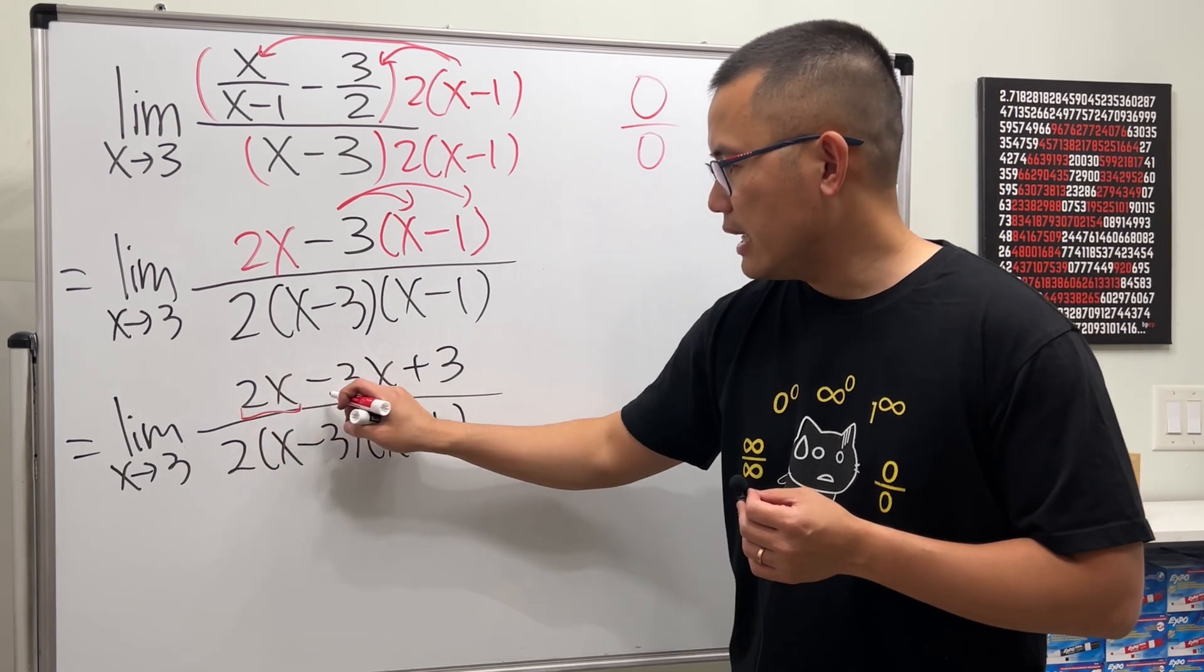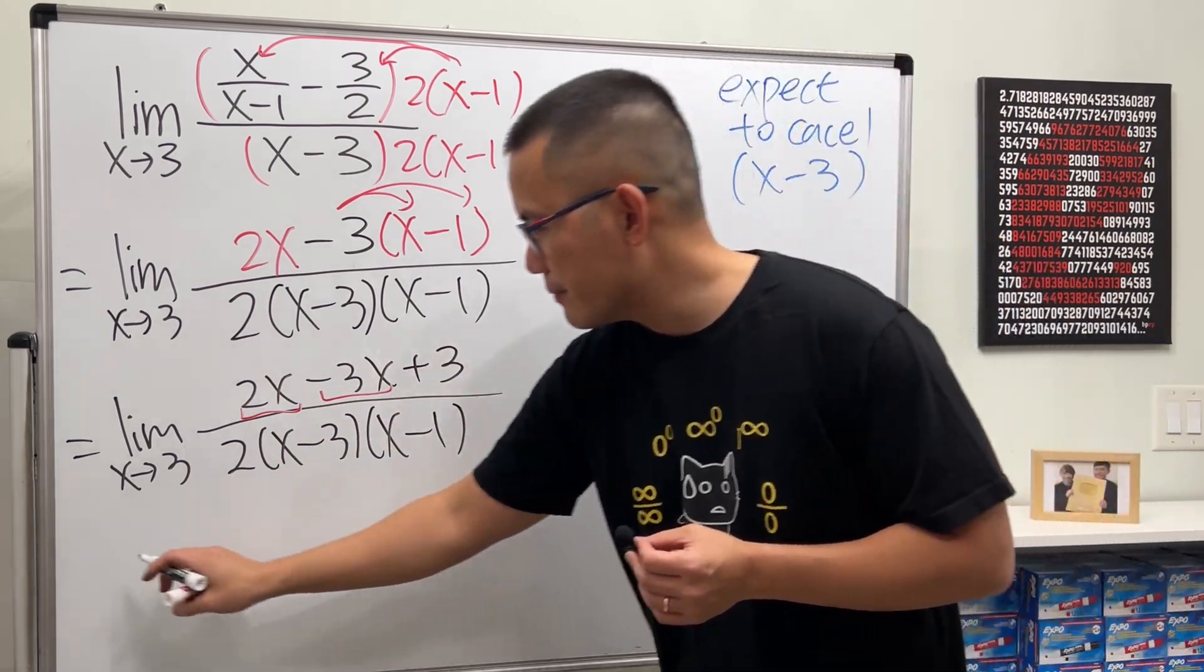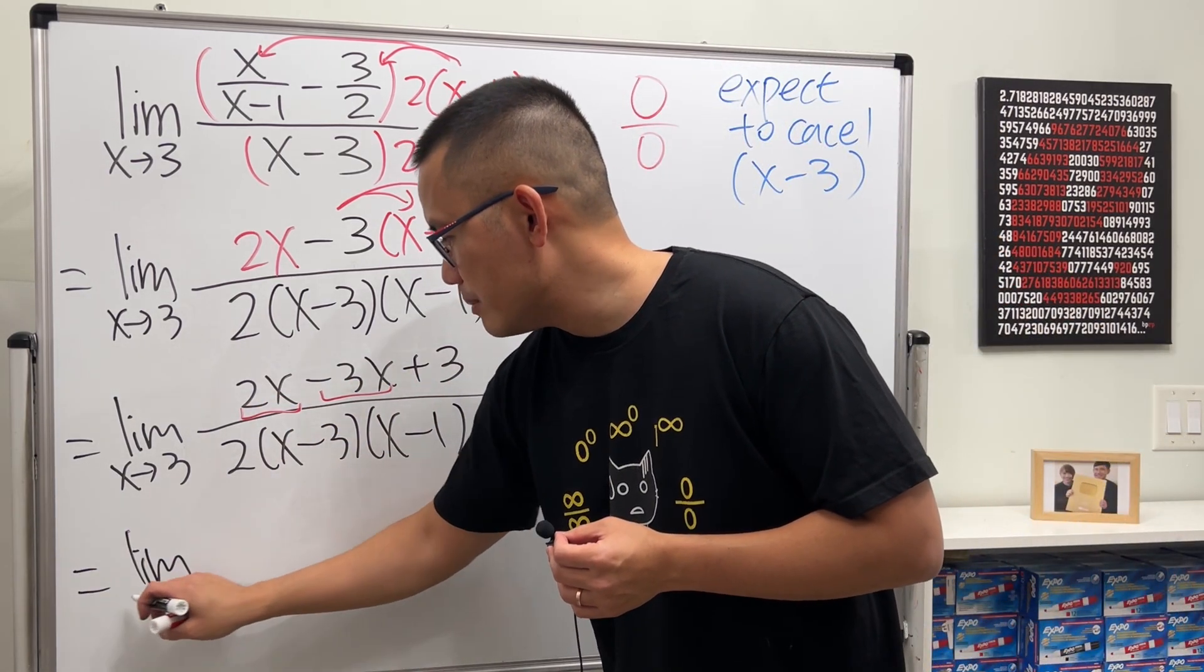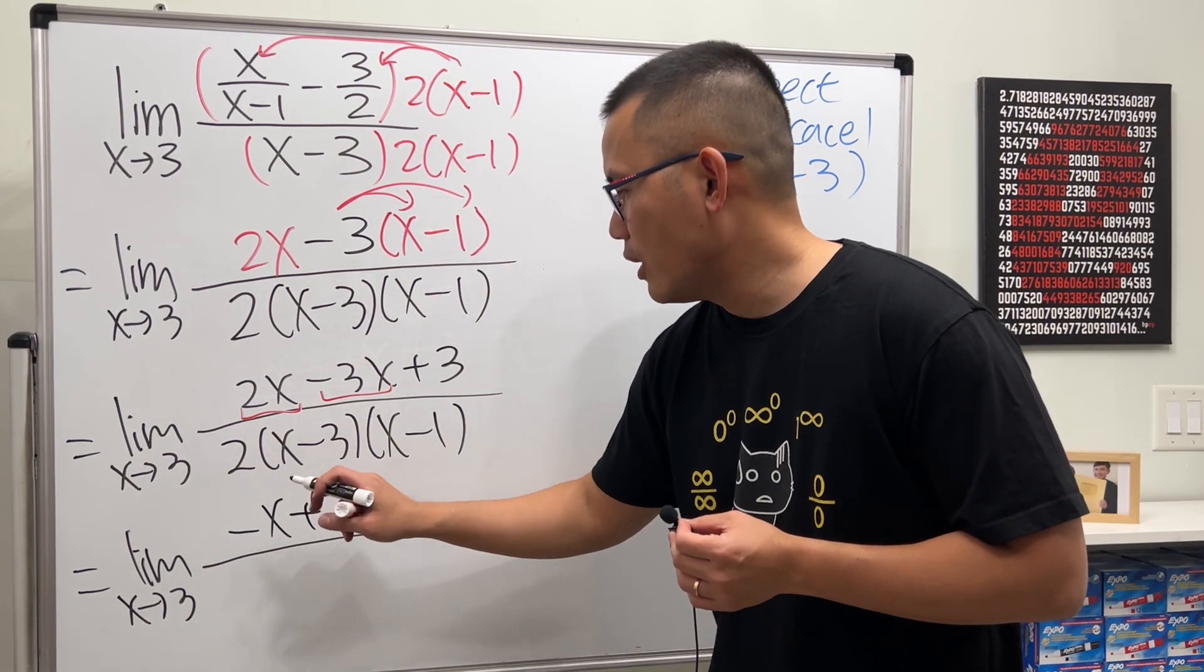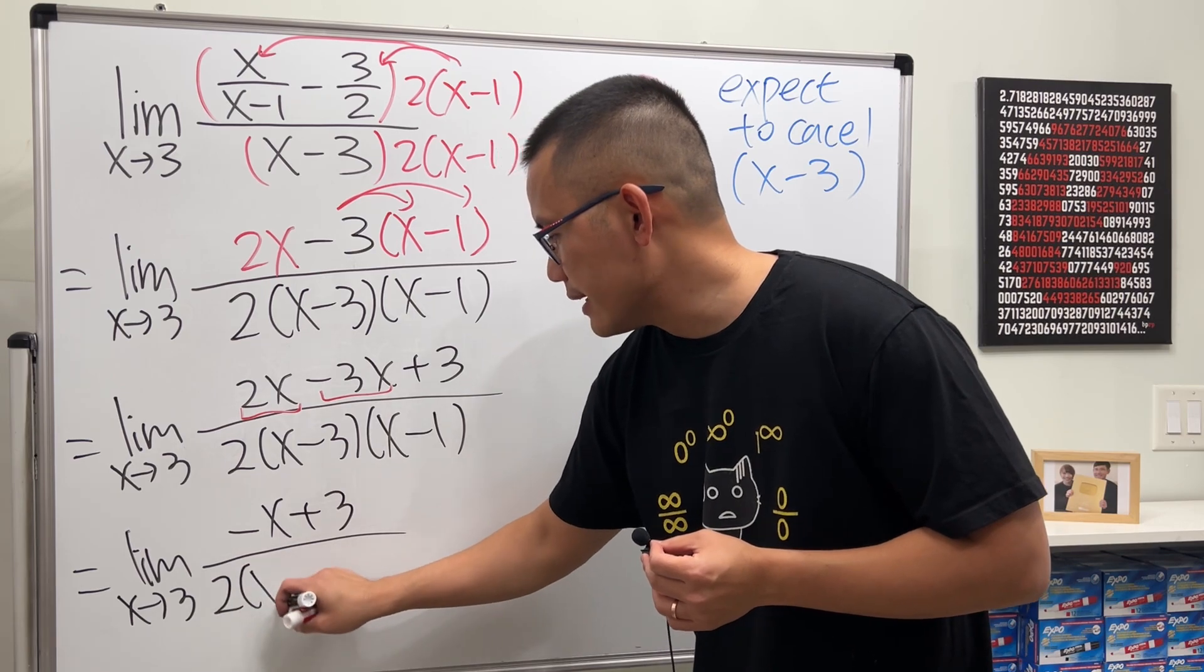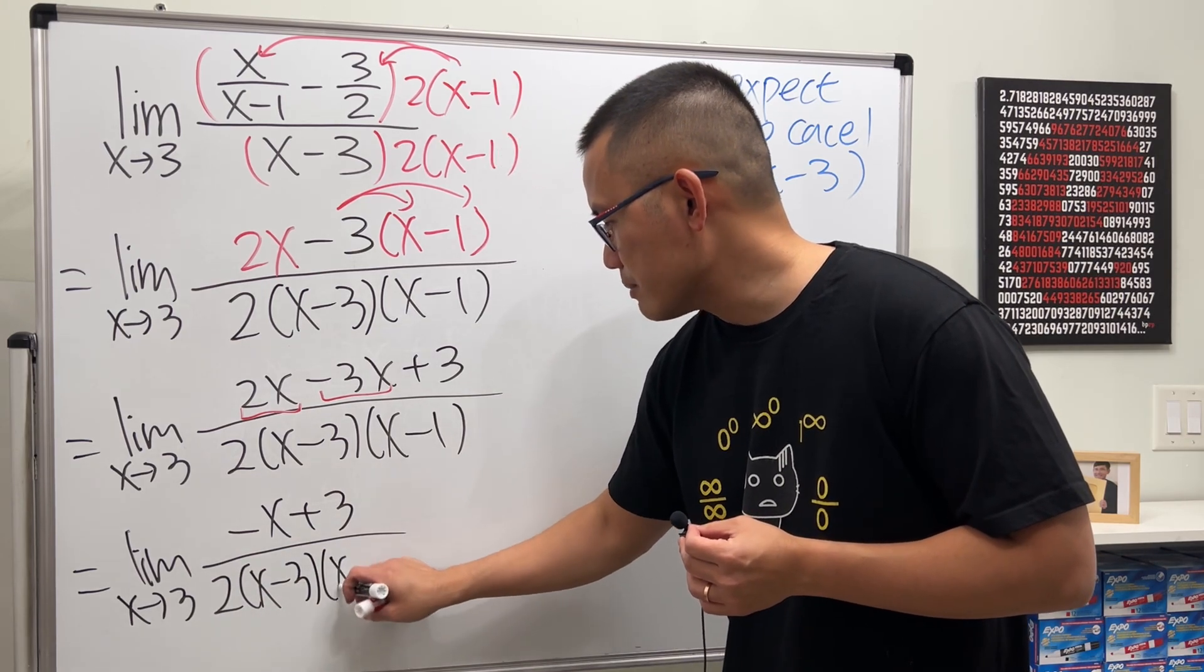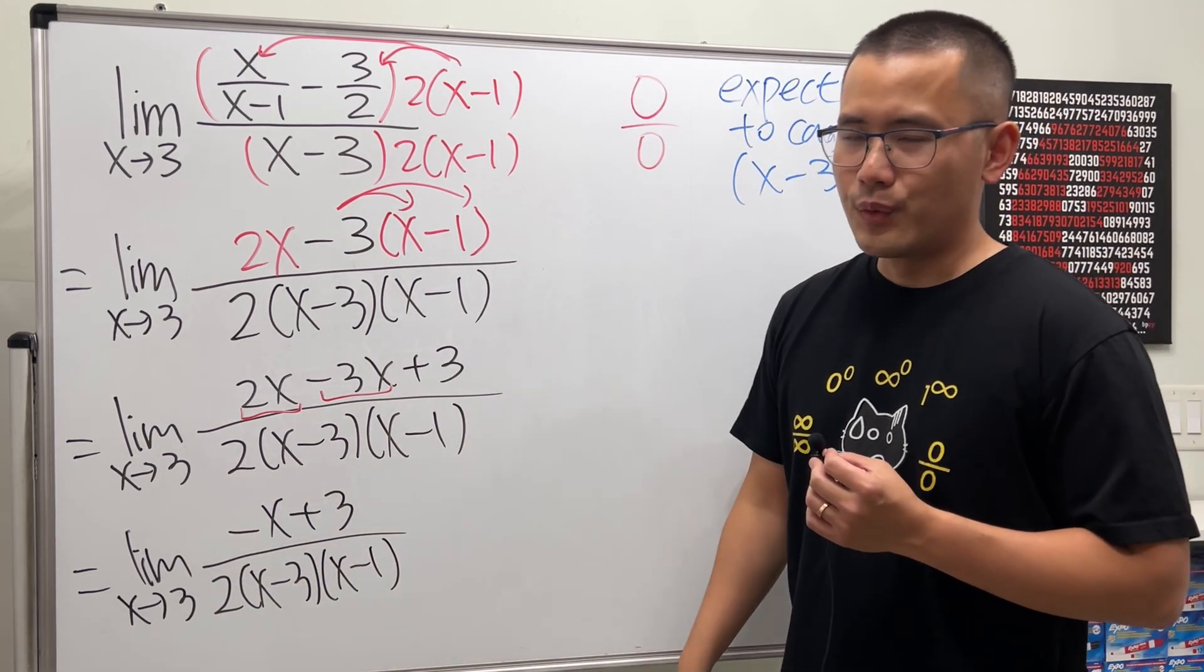Now this and that is just negative x. So this is the limit x approaching 3, we have negative x plus 3 over 2 times x minus 3, over 2 times x minus 3, x minus 1. We're almost there.